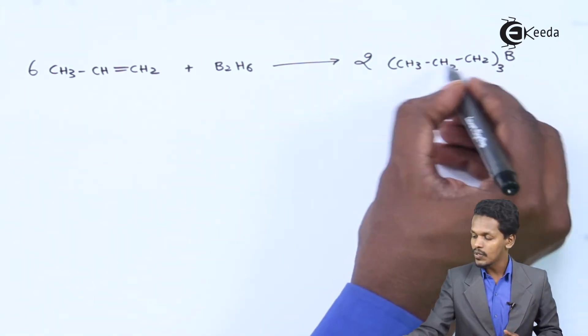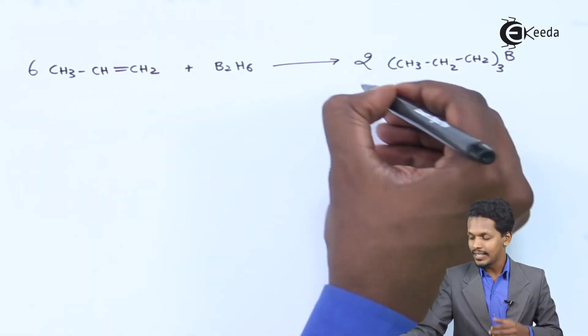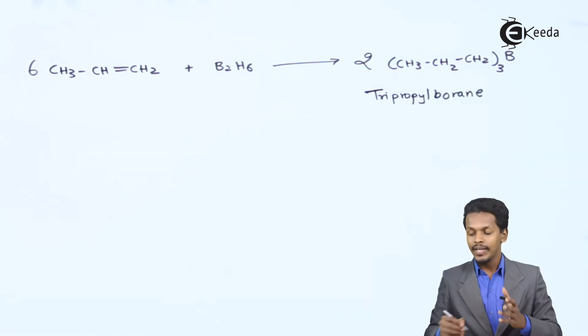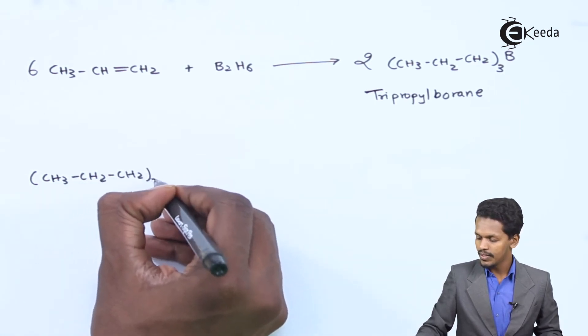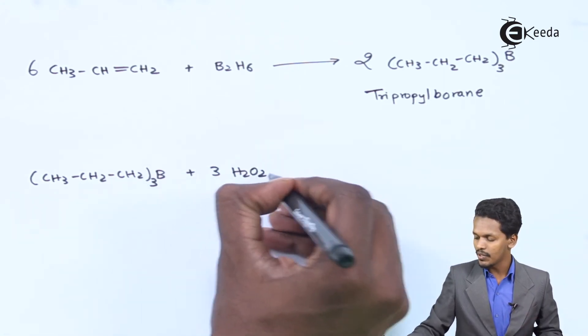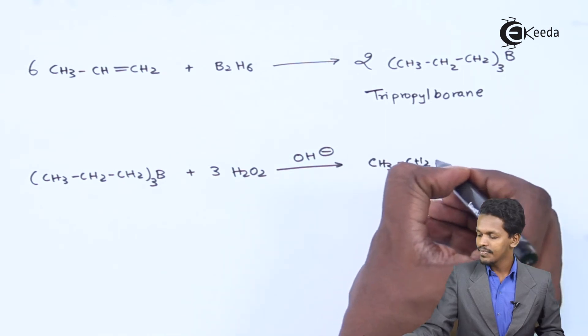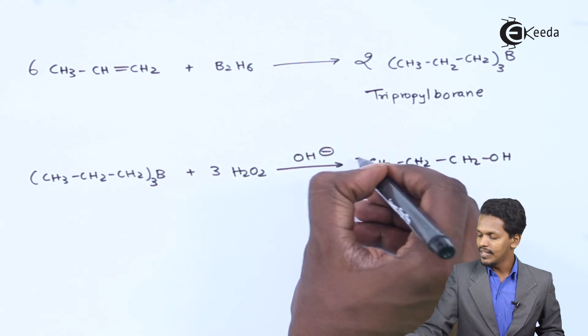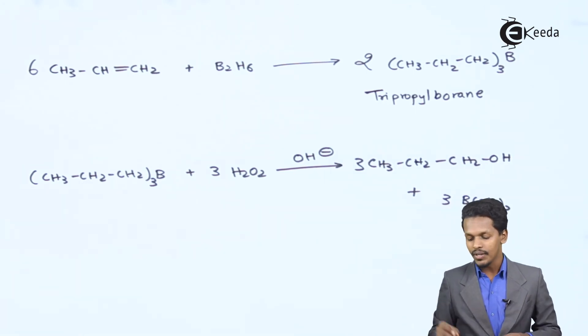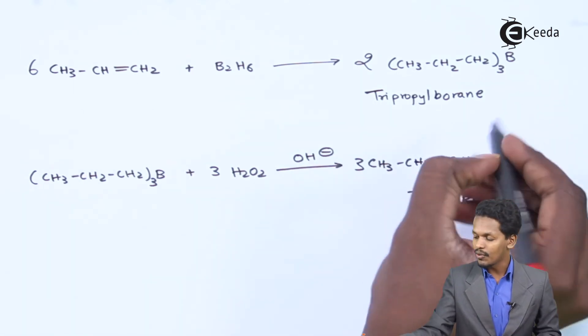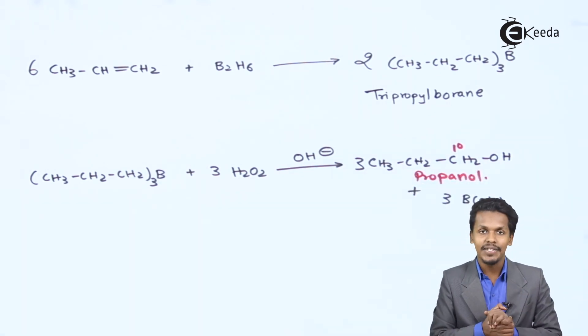And the name of the product that we have obtained over here is - because there are 3 propyl groups that have been attached to the borane or boron, the name is tri-propyl borane. So now 1 mole of tri-propyl borane (CH3-CH2-CH2)3B will react with 3 moles of H2O2 that is hydrogen peroxide in presence of the strong base OH-. And the product that we will get is 3 moles of CH3-CH2-CH2-OH and the by-product is B(OH)3. So this is the product that we have obtained and this alcohol is nothing but a primary alcohol and the name of this is propanol.